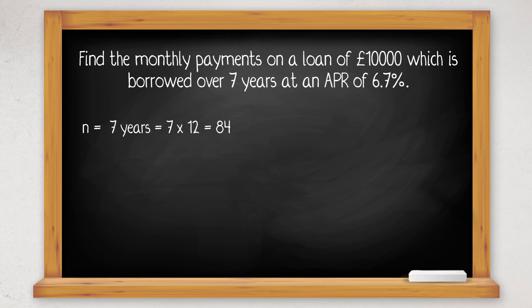We also need to work out the rate per period, or the rate per month. So that's 6.7%. Let's change it into a decimal by dividing by 100, and then divide it again by 12 to get the monthly rate.